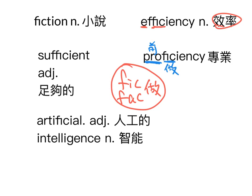sufficient，这个单字最好记。suf就是sub，sub是底下，fic是做，东西做做做做到连底下都有了，就是非常够，sufficient是足够的。